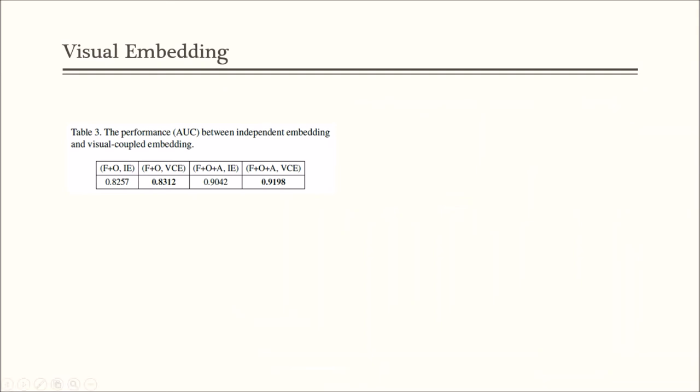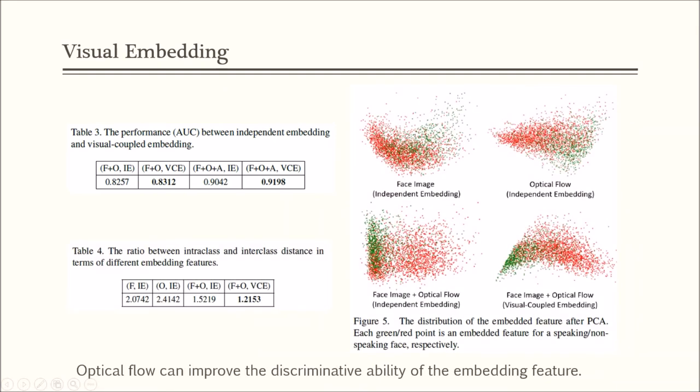This is because it can learn the spatial correlation between raw image and optical flow. To visualize the distribution of visual-coupled embedding and independent embedding, we randomly select 3,800 embedding features from the test set and project them to the 2D space.